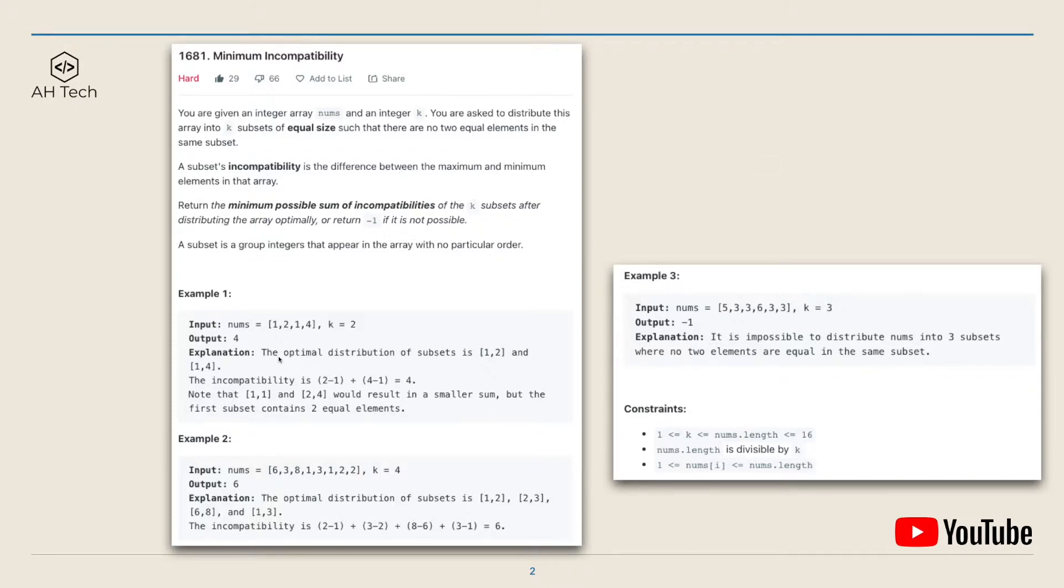For example 1, the optimal subset distribution is arrays [1, 2] and [1, 4]. The minimum incompatibility is (2 - 1) + (4 - 1) which equals 4.